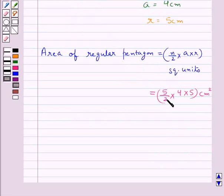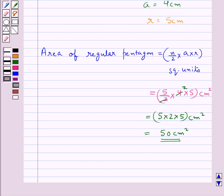Now 2 goes into 4 twice, so this is equal to 5 into 2 into 5 cm square, which equals 50 cm square. So the area of the regular pentagon is 50 cm square whose side is of measure 4 cm. The final answer is 50 cm square.